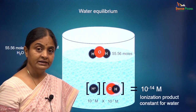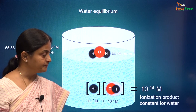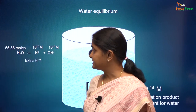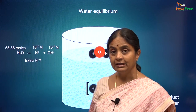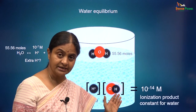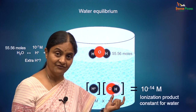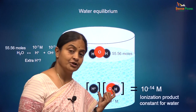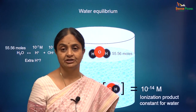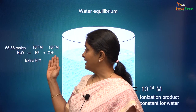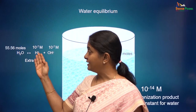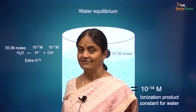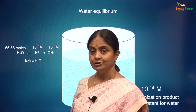This is called the ionization product constant for water and must hold at that value. When you add excess acid or extra hydrogen ions, the hydroxyl ion concentration must reduce so as to maintain the product of concentrations of these two species at 10⁻¹⁴. If you add extra hydroxyl ions, the hydrogen ion concentration will come down, and that is how pH becomes more than 7 when you add alkali.